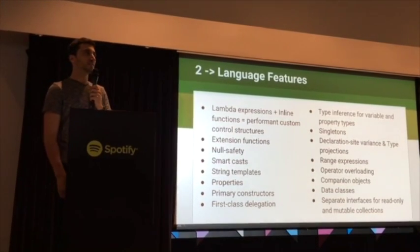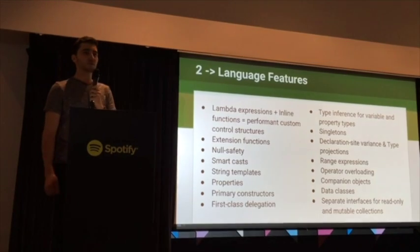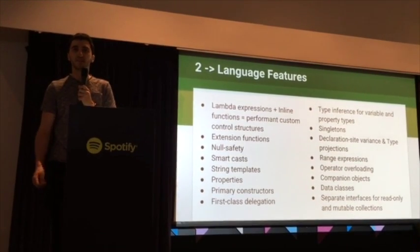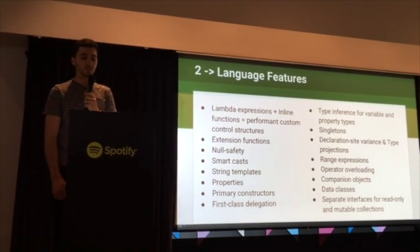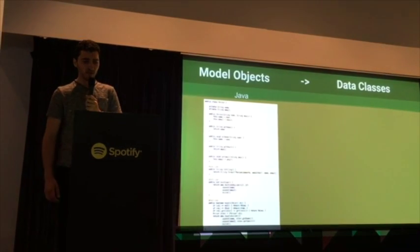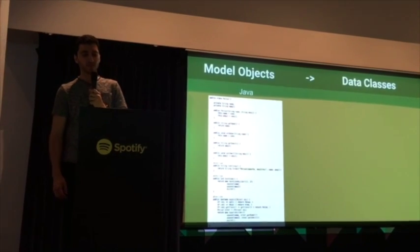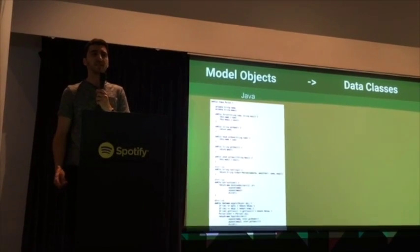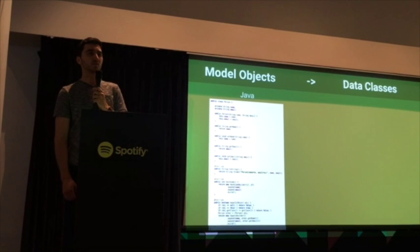This is a mostly exhaustive list of all the features in Kotlin, and we'll go through a couple of them today. The first is called data classes, and it really speaks to the conciseness of the language.